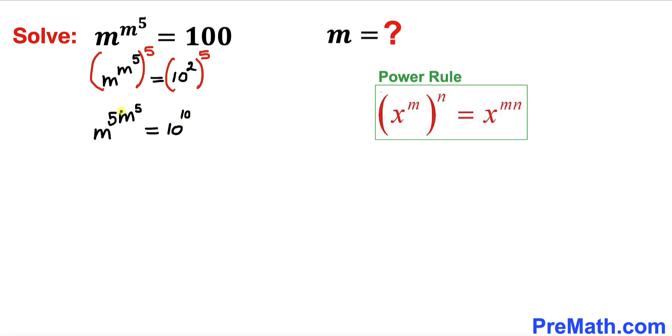Now let's go ahead and apply this power rule on the left-hand side once again. So this could be written as m to the power of 5, and then whole power m to the power of 5 equals 10 to the power of 10 on the right-hand side.